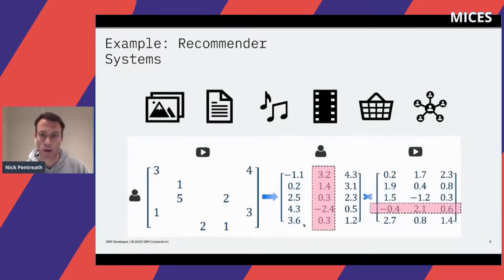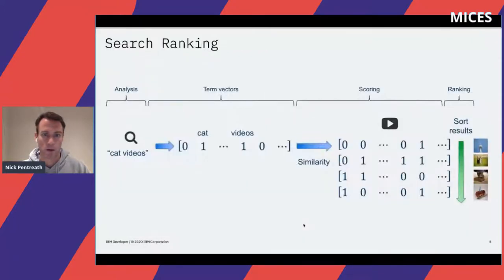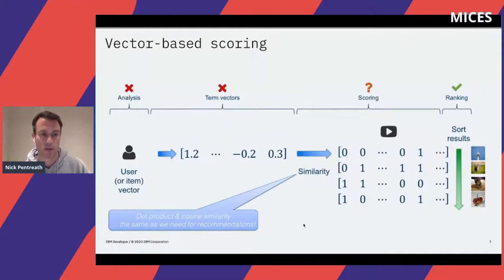This looks very conceptually similar to the way search ranking works. We start with a query, represent it as a term vector—kind of a binary term vector perhaps—compute a similarity, and then sort the results by similarity. So can we use the same set of machinery to compute over arbitrary vectors that are not necessarily the typical search query vectors? For example, in recommendations we have a user vector.